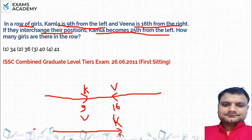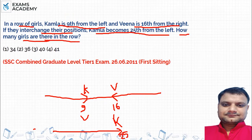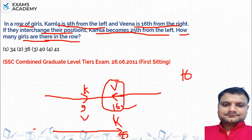Then how many girls are there in a row? Veena's position was 16th from the right side. Then when they changed positions, Kamala is now 25th from the left. So how many girls are there? 25th.